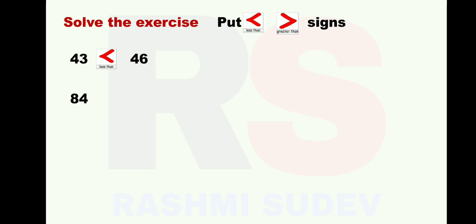Next question: 84 and 86. Given numbers are 84 and 86. On the left hand side it is 84, on the right hand side it is 86. 84 is the smaller number and 86 is the greater number. Therefore we will put less than sign. It is read as: 84 is less than 86.